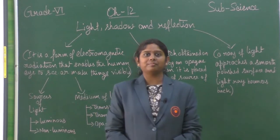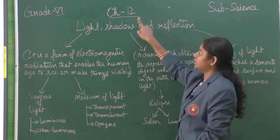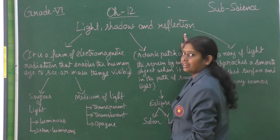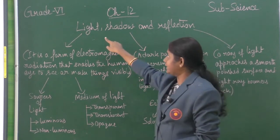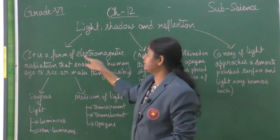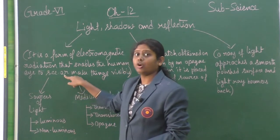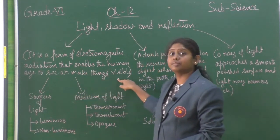Hello everyone, welcome back again. Let us start the summary video of Chapter 12: Light, Shadow and Reflection. Light is a form of electromagnetic radiation that enables the human eye to see or make things visible.